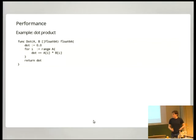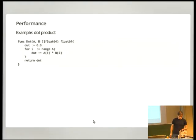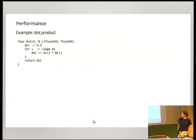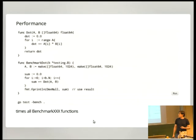How about performance? This is a high performance session. Let me show a simple dot product example. This is Go code to compute the dot product of two vectors — just the sum of the products of elements. You can very easily benchmark this with Go's built-in testing and benchmarking framework.